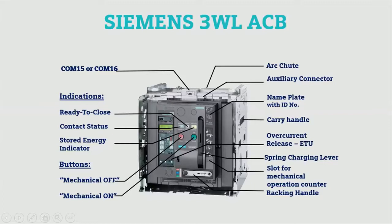There is an electronic trip unit for configuration of the ACB, and an LCD display that provides technical information. On the upper side there is a communication port where Profibus or Modbus communication is possible. On the back side there is an arc chute and auxiliary contacts. A handle is provided for dragging the ACB out from the rack, along with a slot for a mechanical operation counter and the ETU.